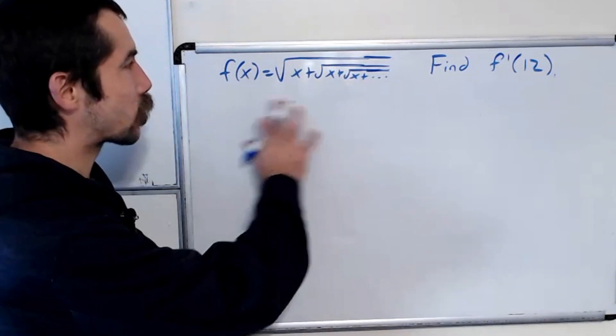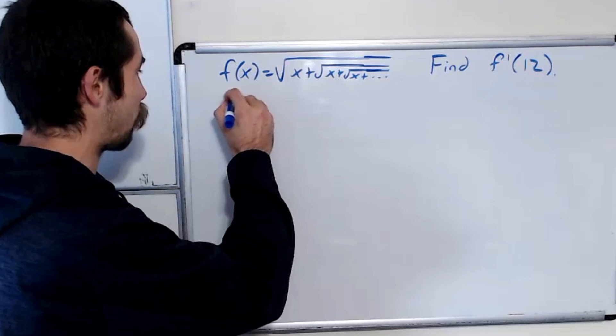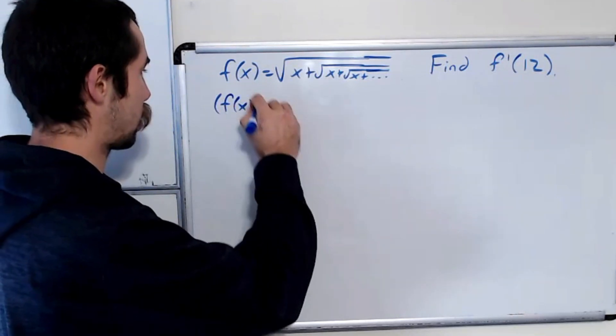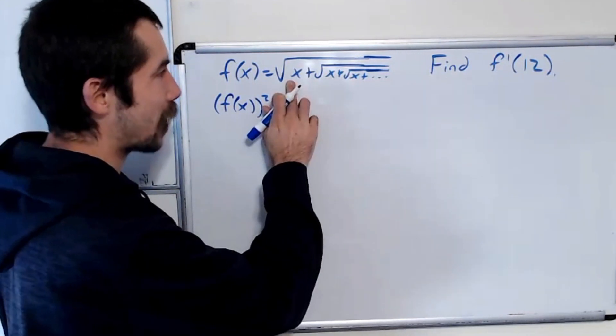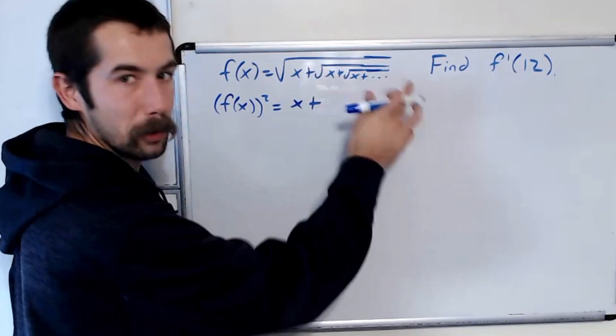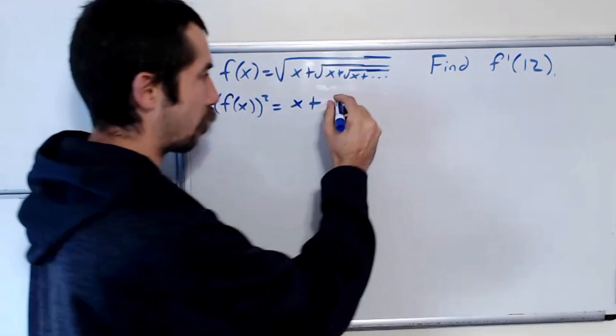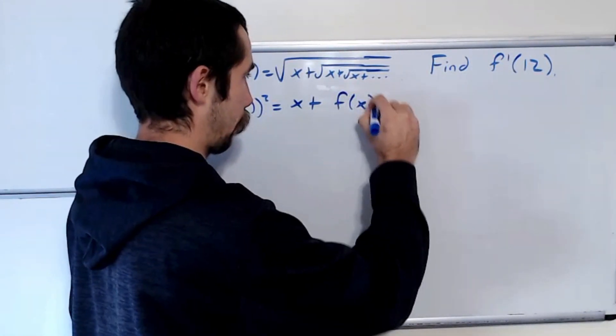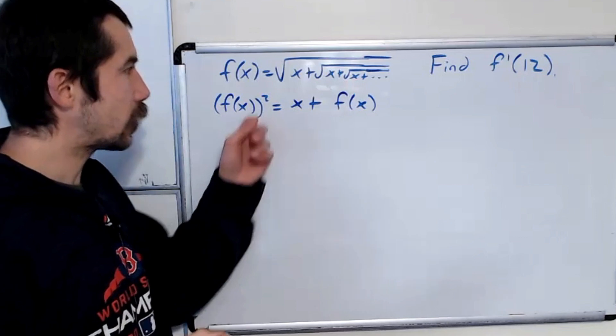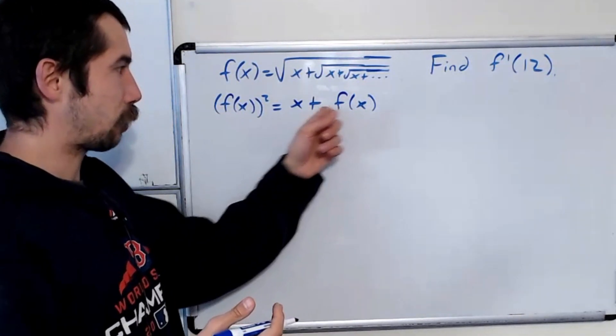Okay, so the first thing we'll do is let's just square both sides of this equation, and we'll see the left-hand side becomes f of x squared, and the right-hand side becomes x plus, well, it's the square root of x plus the square root of x plus yadda yadda yadda, that's just f of x. Okay, so this function has the property that if you square it, you get x plus the original function.